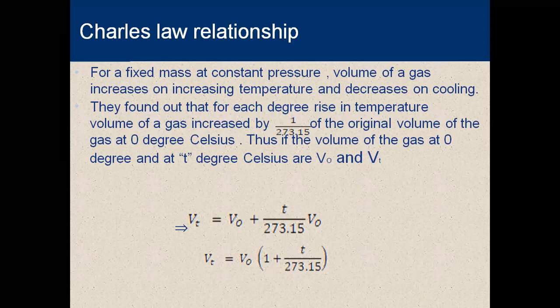Charles found that when applying temperature at constant pressure, increasing each degree of temperature caused the gas volume to increase by 1/273.15 of its original volume. So if at zero degrees Celsius the volume is V₀, and at temperature t degrees the volume is Vt, the change in volume per degree is 1/273.15 of the original volume.